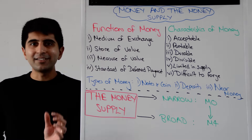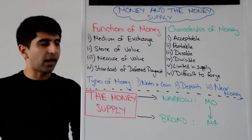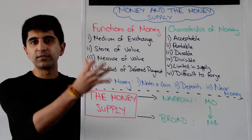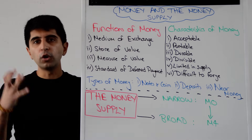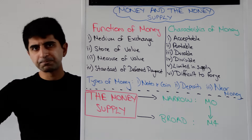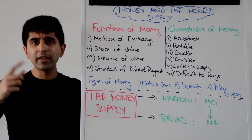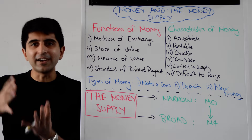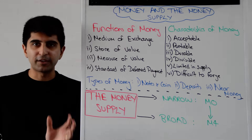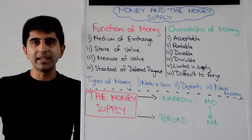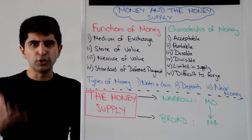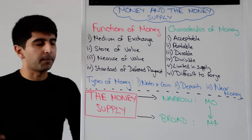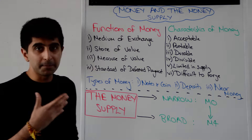Money also has to act as a unit of account, or a measure of value. So if you have two goods — one with a price of £10 and one with a price of £25 — you know that the £25 good is different in some way. It gives you that unit of account function: different prices tell you the goods are different in some way.